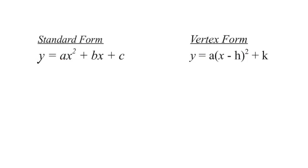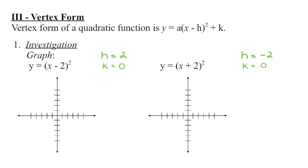In this lesson we're going to investigate the vertex form of a quadratic function, beginning with what the variables h and k control. Each of these functions are quadratic functions — if we were to foil them out we can see they would have a degree of 2. Each is written in vertex form, and the a value is going to be 1. Remember, a is the value in front of the bracket squared, and here it is 1 because it's not written — a value of 1 is implied.